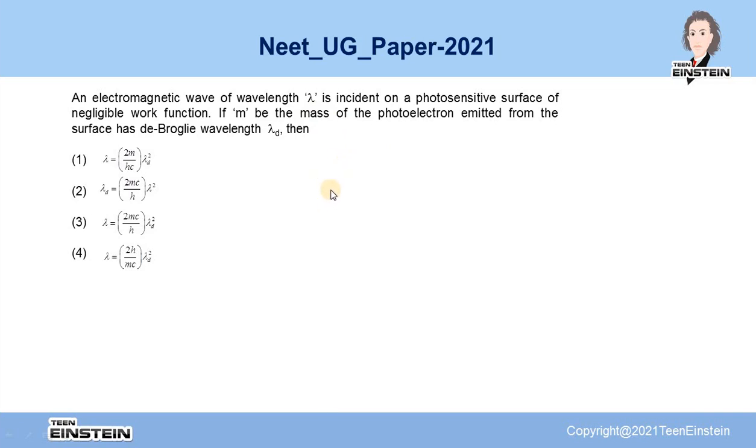First, let us write down the energy of the incident radiation which has wavelength λ, and that can be written from quantum physics to be E = hc/λ. So energy of incident radiation is hc/λ.